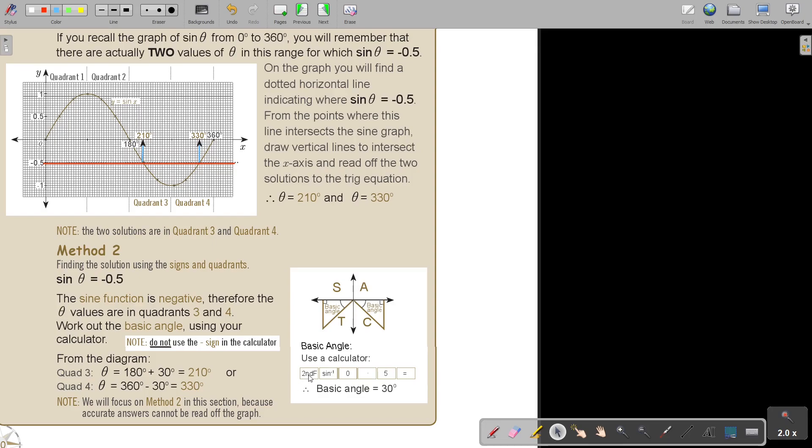You press shift to tell your calculator to go to the angles. So second function, shift or sin, 0.5 equals, and you get 30 degrees. That is the angle to the x-axis, the basic angle, beta. From the diagram, it's 180 + 30 and 360 - 30 if it's in that quadrant.